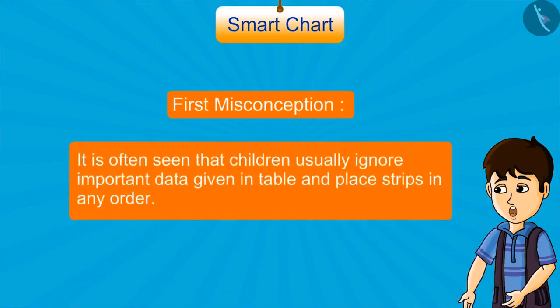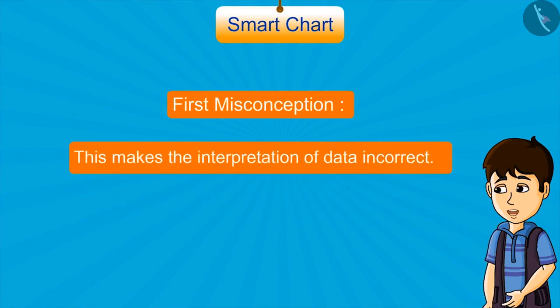It is often seen that children usually ignore important data given in table and place strips in any order. This makes the interpretation of data incorrect.